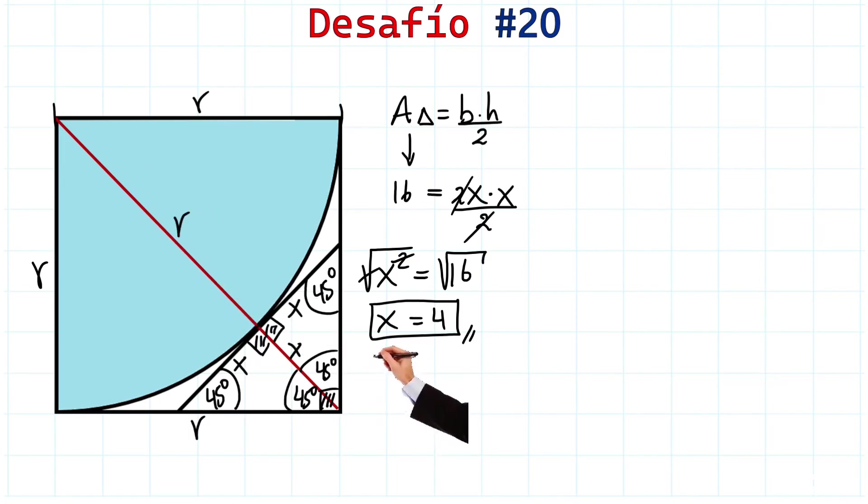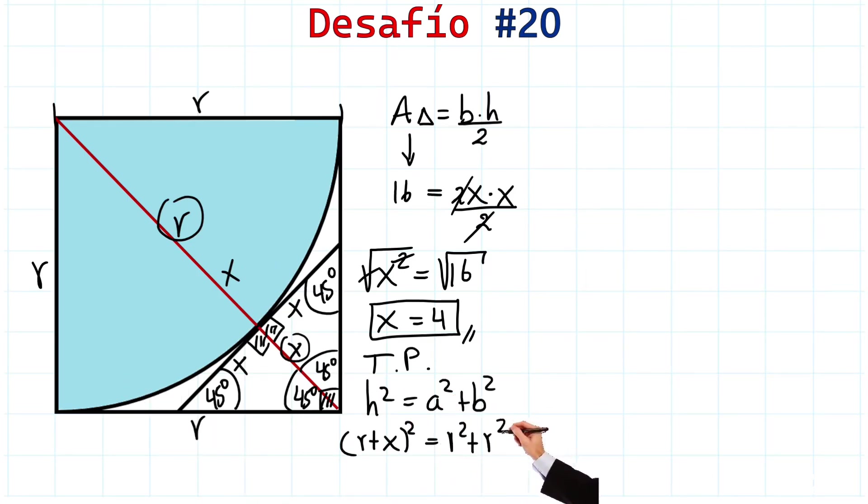Now, we apply the powerful Pythagorean theorem. We know that the hypotenuse squared is equal to one side squared plus the other side squared. Which one is the hypotenuse? The hypotenuse is R plus X. So, here we have R plus X squared, and the sides are R. So, we get R squared plus R squared, and notice that X is 4. We can substitute.